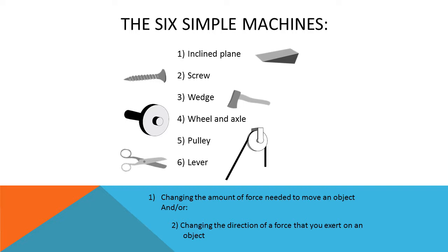Simple machines don't do the work for you like a robot, but they do make work easier. Simple machines can help you do work in one or both of the following ways. First, they can change the amount of force needed to move an object, or they can change the direction of a force that you exert on an object.